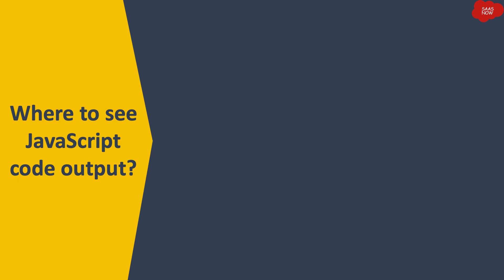Where to see JavaScript code output: programming can only be understood when you see it practically with the output of an executed program. I will be showing you the output of JavaScript code in ServiceNow with its different functionalities. The first one is browser alert, which is triggered with the JavaScript method called 'alert'. I will write the JavaScript code and you will see the output in a browser alert message. The second one is logs.